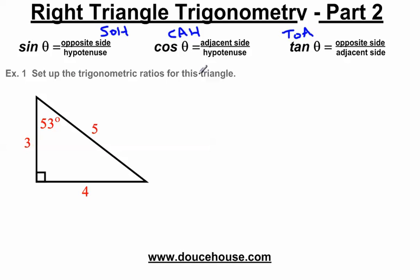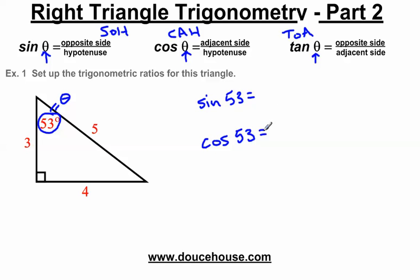For this particular problem: set up the trigonometric ratios for this triangle. We need to know what angle we're focusing on. This little theta here is representing an angle — that is the angle that's not the 90 degrees. So this angle here is going to be the theta in these problems. I'm going to write down sine of 53 equals, cosine of 53 degrees, and tangent of 53 degrees. A lot of students forget that we need to have an angle after sine, cosine, or tangent, and since we're focusing on the 53 degree angle, that's the angle for all three.